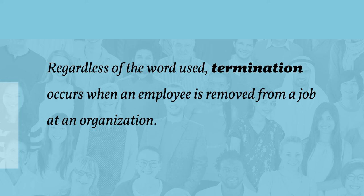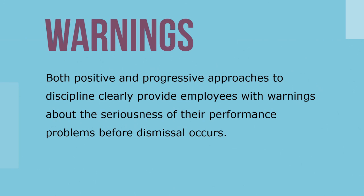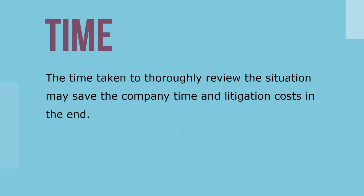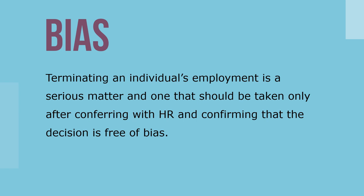Termination occurs when an employee is removed from a job at an organization. Both positive and progressive approaches to discipline clearly provide employees with warnings about the seriousness of their performance problems before dismissal occurs. Termination should not take place in the heat of the moment — even in cases involving very serious infractions, such as an employee found drinking alcohol on the job, the employee should be suspended without pay pending an investigation. The time taken to thoroughly review the situation may save the organization time and litigation costs in the end. Terminating an individual's employment is a serious matter and should be taken only after conferring with HR and confirming the decision is free of bias. Utilizing an employee assistance program (EAP) professional can help defuse a potentially violent situation.